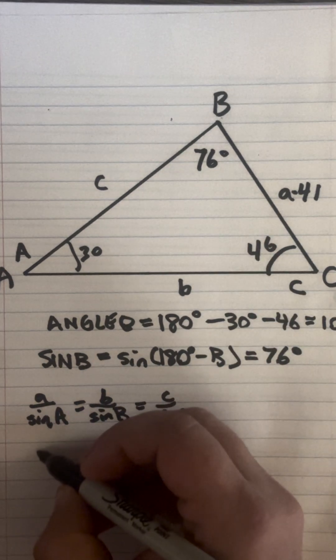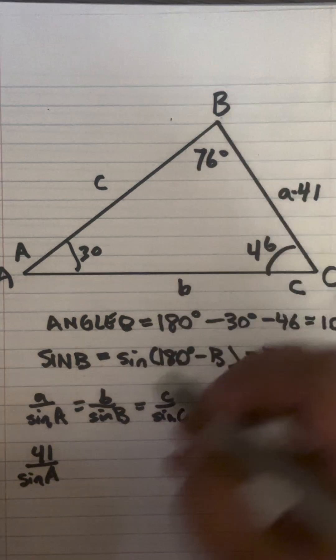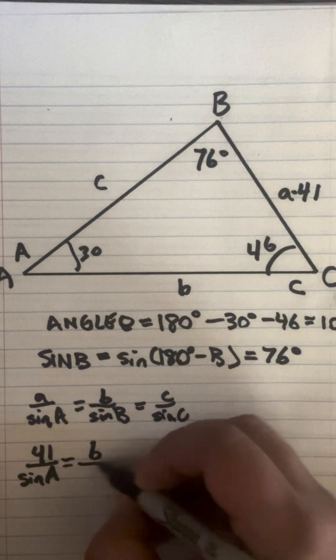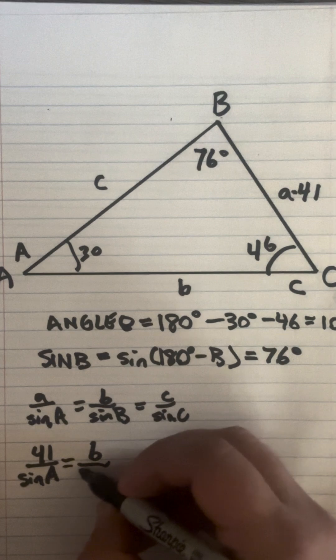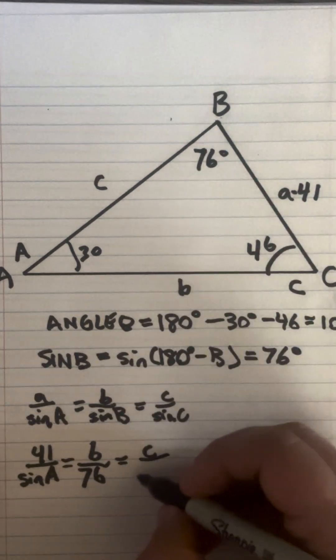So we already know that side A is 41 and we'll put sine A down here. We don't know B but we'll place B. We do know sine B which is 76 and C is sine of 46.